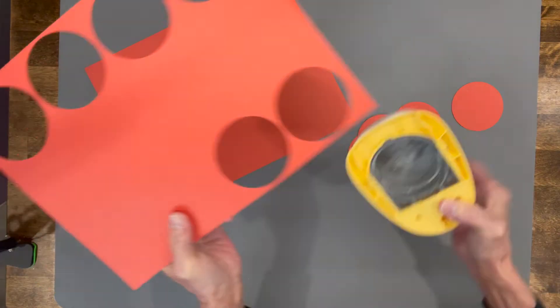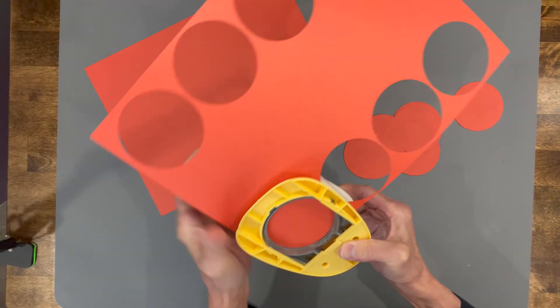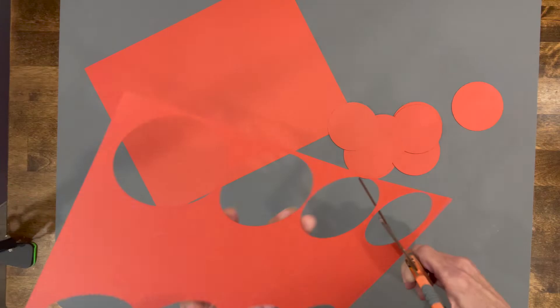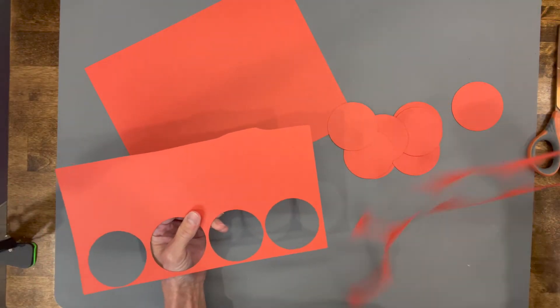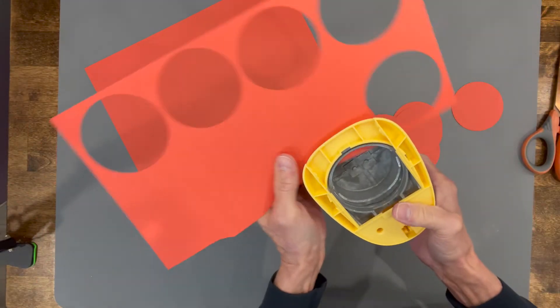It just kind of helps you guide it a little bit better because you can see where you're punching. Then just go ahead and trim off right at the bottom of the circle of the one you just cut, and you can get your other four cut out of there.